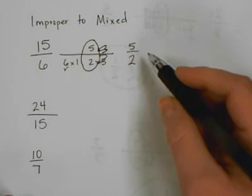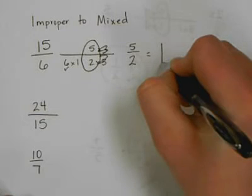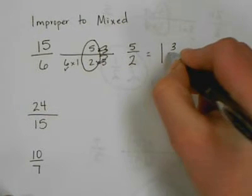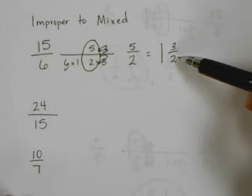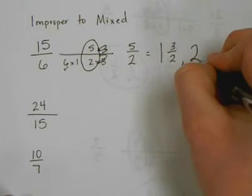So we need to change this improper fraction into a mixed fraction. What I tell students to do is on my first try, so they think on my first try with a big 1, 5 minus 2 is 3, and they keep the last name halves. Now, if you notice, the fractions part is still improper, so my first try didn't work, so I need a second try.